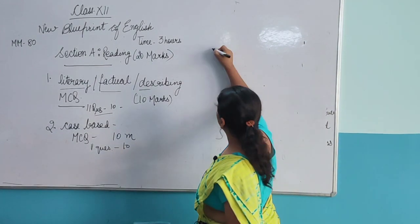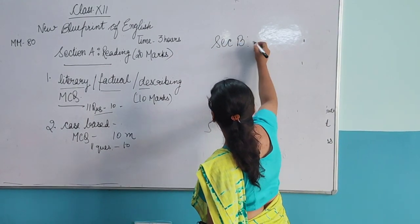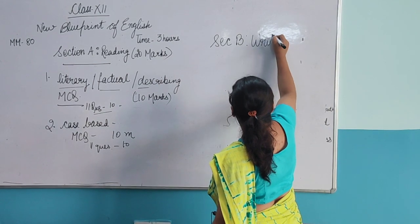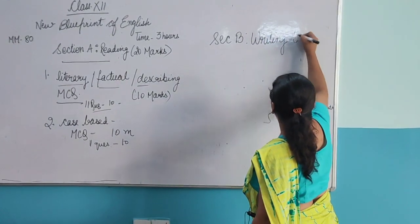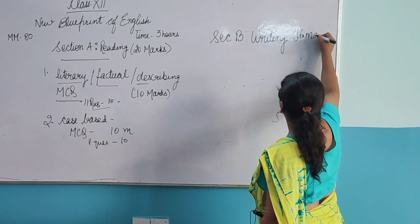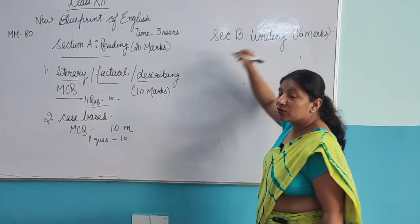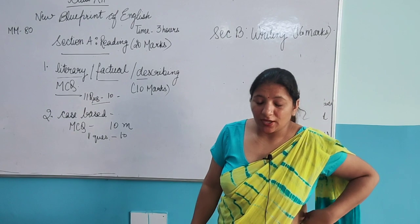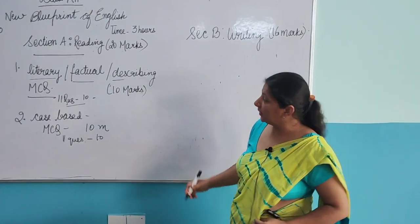Now let us move to Section B — the writing part. This is of 16 marks. Earlier it was of 30 marks, but now it has been reduced to 16 marks.